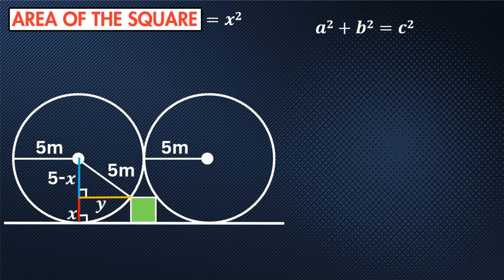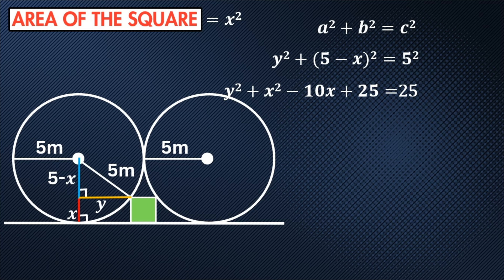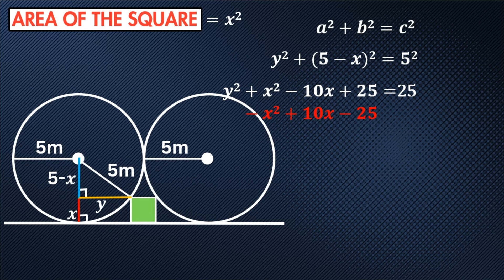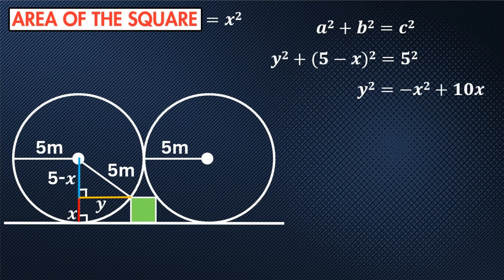Using Pythagoras's theorem, a squared plus b squared equals c squared, where a is y, b is five minus x, and c is five, we can then find y. Let's first expand the bracket and square the five. So we'd have y squared plus x squared minus 10x plus 25 equals 25. We can then subtract x squared, add 10x, and subtract 25 from both sides. This leaves us with y squared equals negative x squared plus 10x. To find y, take the square root of both sides: y equals square root of negative x squared plus 10x.